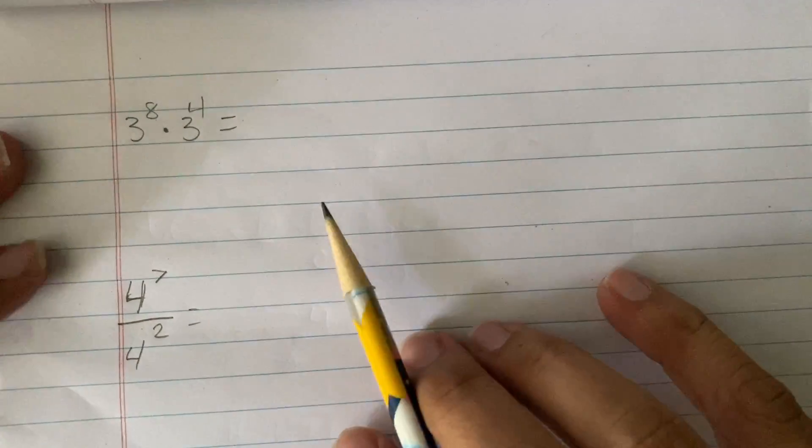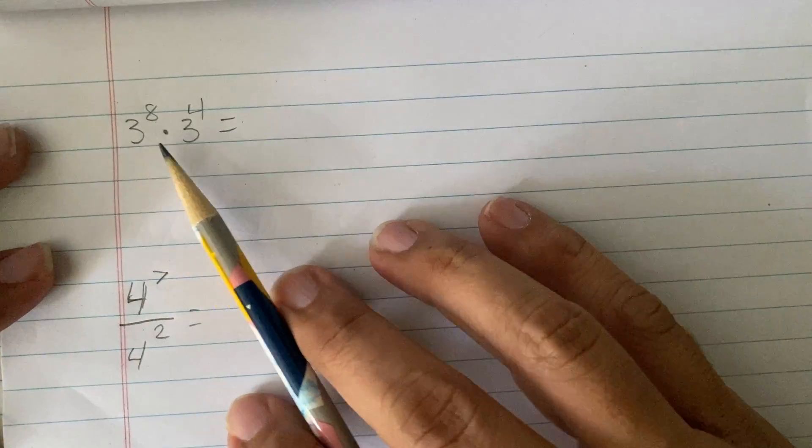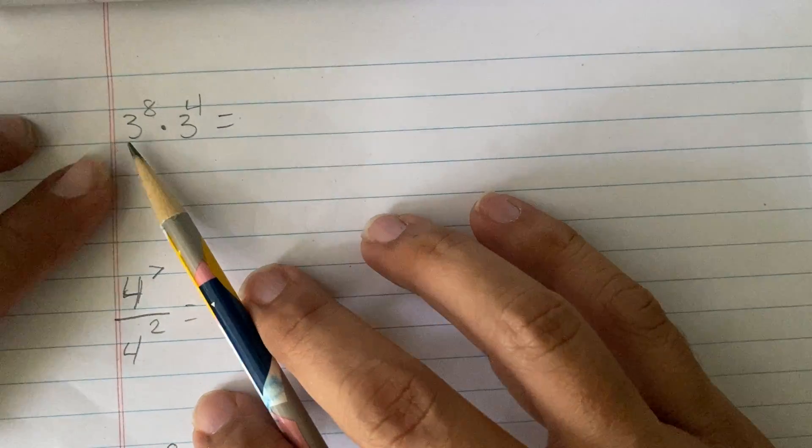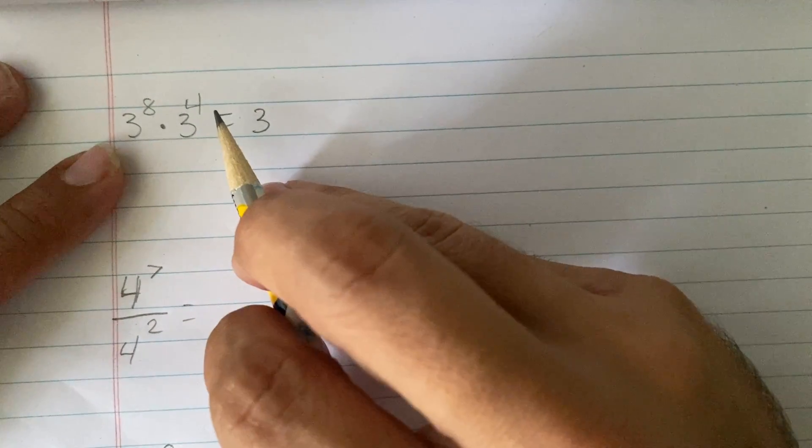Okay, here we go. So, when you're multiplying things with exponents, if they have the same base, the base will continue and the exponents will add.